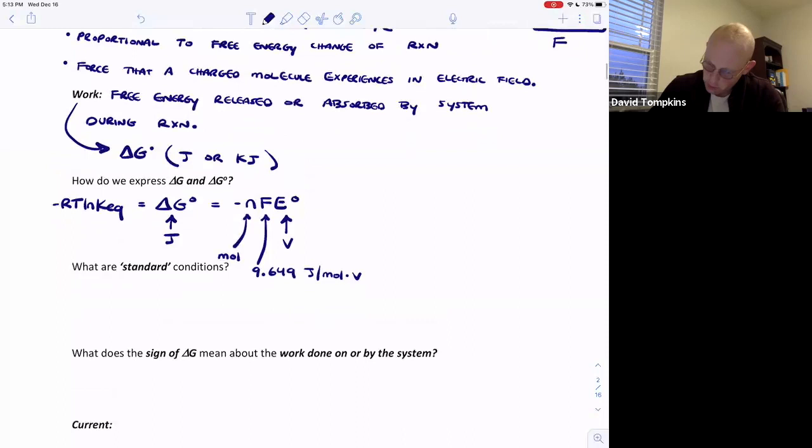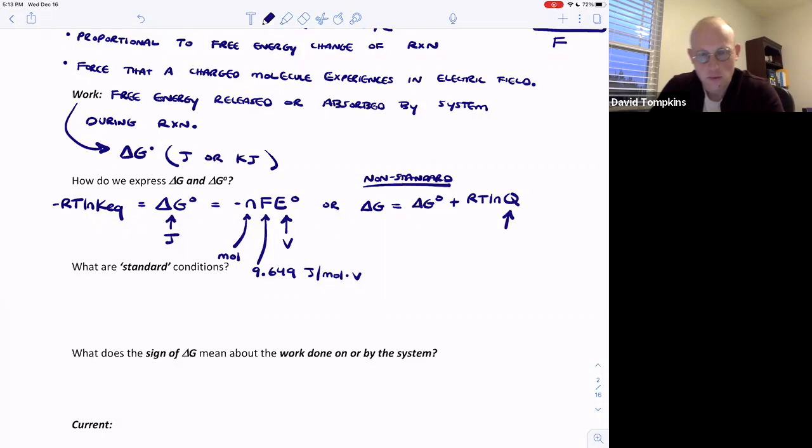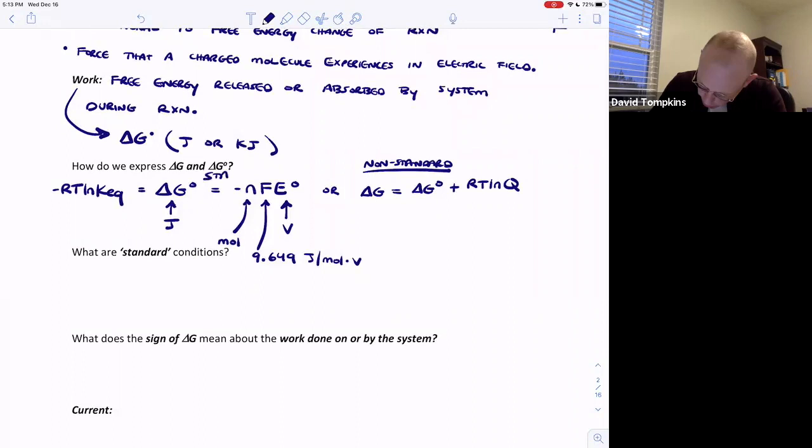We use this delta G standard to explain the work that can be done by an electrochemical reaction when it's releasing free energy under standard conditions. But another equation for the free energy change is the non-standard one. Under non-standard conditions here we use delta G with no degree symbol and that's related to the free energy change under standard conditions plus RT multiplied by natural log of the mass action quotient Q. So under standard conditions we refer to delta G standard with the degree symbol, non-standard conditions we have normal delta G.